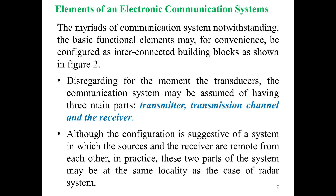Disregarding for the moment the transducers, the communication system may be assumed as having three main parts: the transmitter, the transmission channel, and the receiver. Although the configuration is suggestive of a system in which the source and the receiver are remote from each other, in practice these two parts of the system may be at the same locality, as in the case of a radar system.